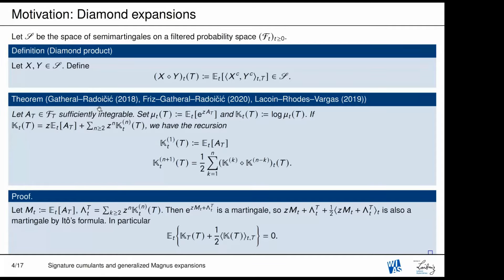The recursive computation of cumulants appeared in a previous paper by Lacroix-Robert and Vargas, who used it to prove convergence of the measure. It had appeared earlier in work by Gader and Radojic, and was generalized by Fritz, Gader and Radojic. In this first paper it appeared in a stochastic finance model. You can compute these K_t's recursively using a formula involving the diamond product. Since it's non-associative, you can reorganize via binary trees. Almost by definition, you can show this exponential defines a martingale, and its stochastic logarithm is also a martingale. Taking the increment's conditional expectation should be zero, and by substituting the definition of K_t and expanding in powers, comparing both sides gives the recursion.